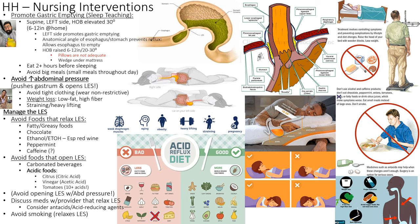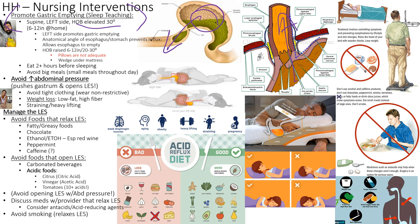Nursing interventions include promoting gastric emptying and proper positioning. Patients should lie on their left side — on the right side, stomach contents are slightly higher than the LES, increasing reflux risk. On the left side, stomach contents lie lower than the esophagus, reducing reflux. The head of bed should be elevated at least 30 degrees.